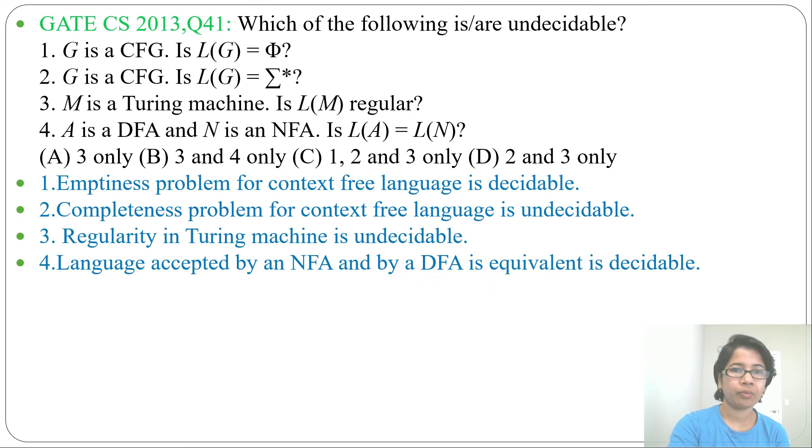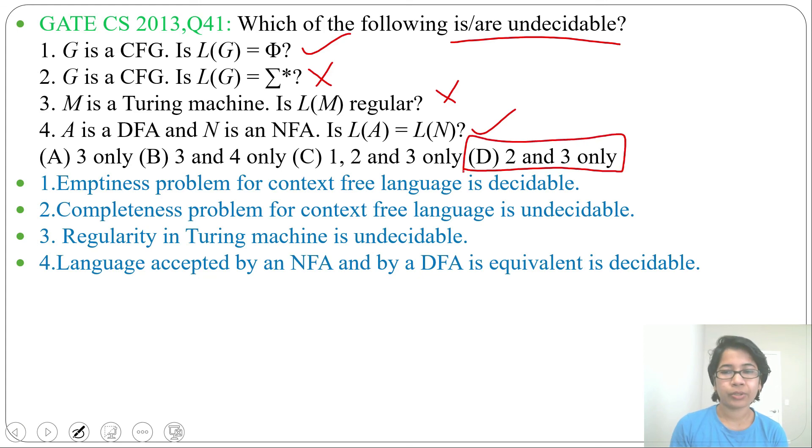We found: 1 is decidable, 2 is undecidable, 3 is undecidable, and 4 is decidable. The question asks which are undecidable - that's 2 and 3. Checking the options, this is present in option D. So the answer is 2 and 3 only. Thank you.